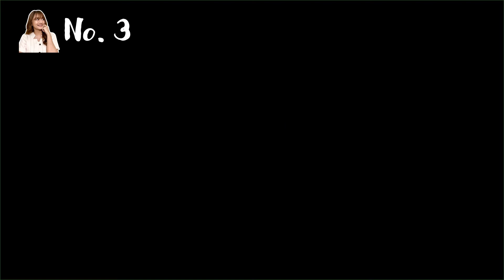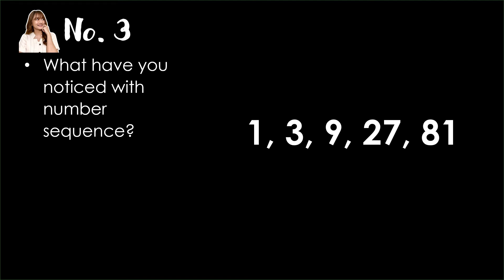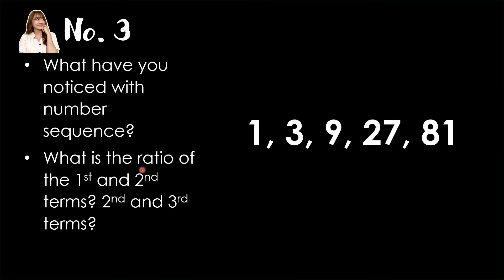Number 3: Observe the given figures on our right. We have 1, 3, 9, 27, and 81. Question: What have you noticed with the number sequence? What is the ratio of the first and second terms? How about the second and third terms?